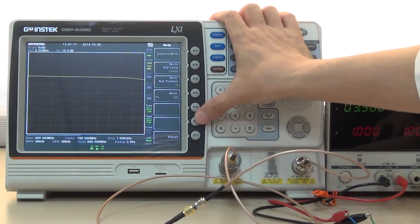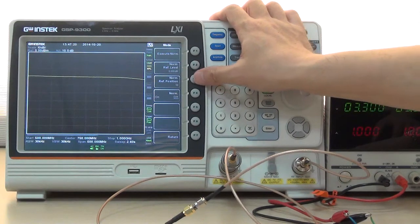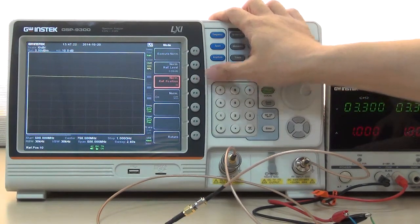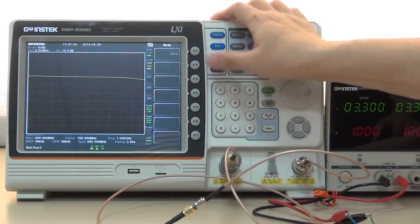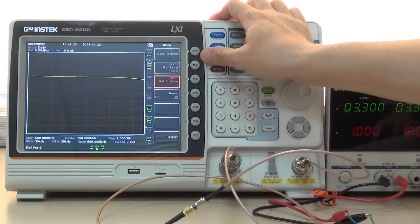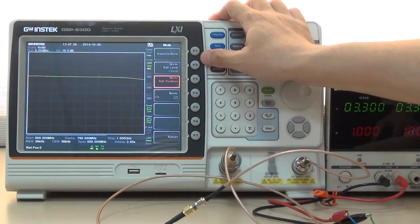Next, press F6 Normalize and F3 Reference Position and input 5 to set Reference Position at the center of Division 5.